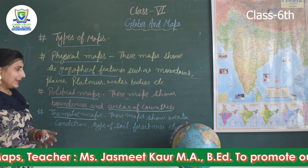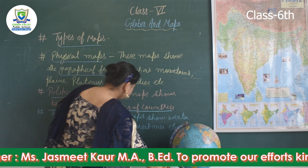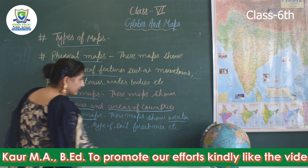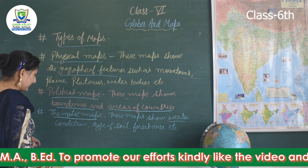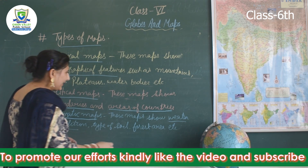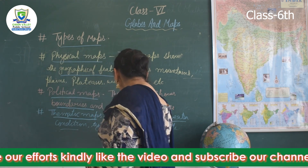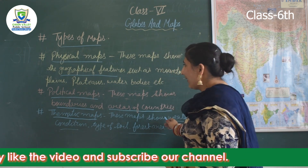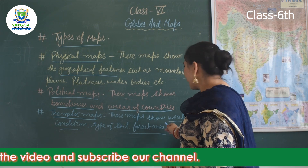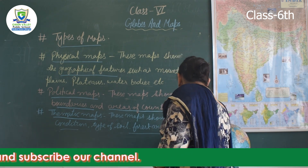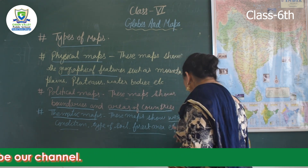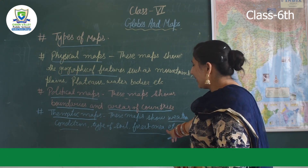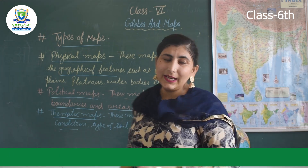The third type is thematic maps. These maps show us particular things such as weather conditions, type of soil, and forest areas.